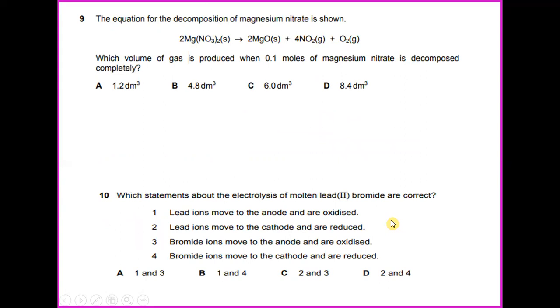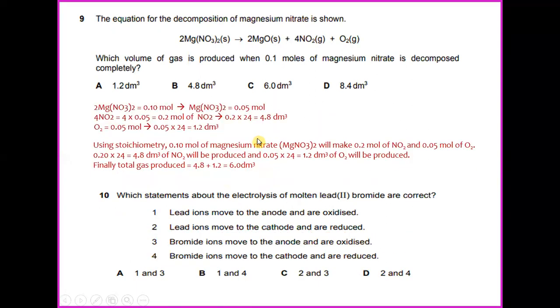The equation for the decomposition of magnesium nitrate is shown. 2Mg(NO3)2 to form 2MgO plus 4NO2 plus O2. Which volume of gas is produced when 0.1 mol of magnesium nitrate is decomposed completely? To answer this question: 2Mg(NO3)2 is equal to 0.1 mol. So if we have magnesium Mg(NO3)2, 0.10 divided by 2 gives 0.05 mol.